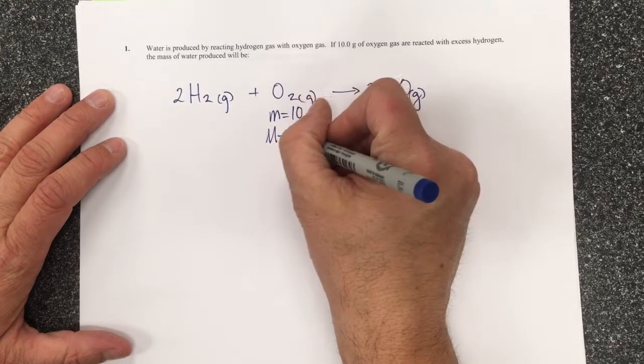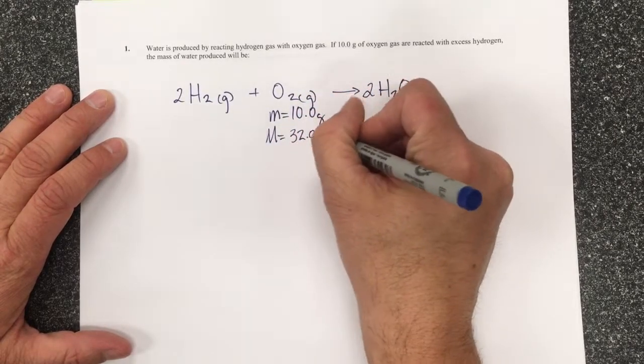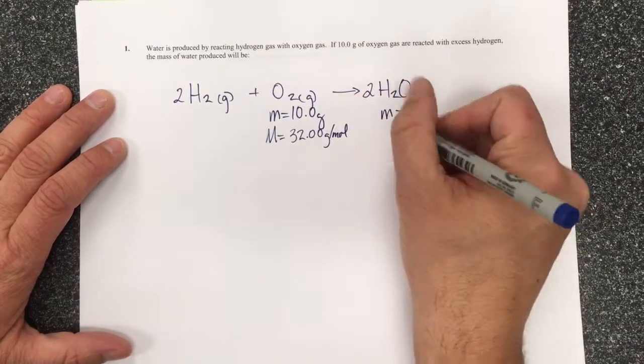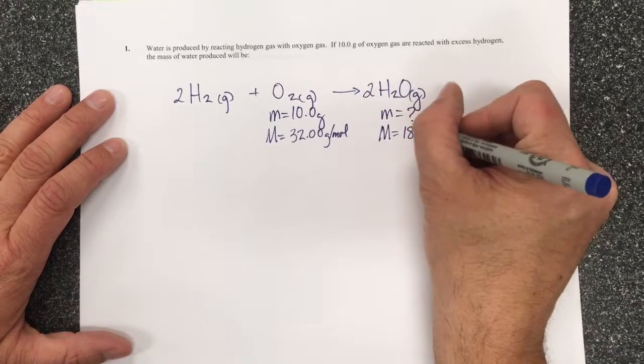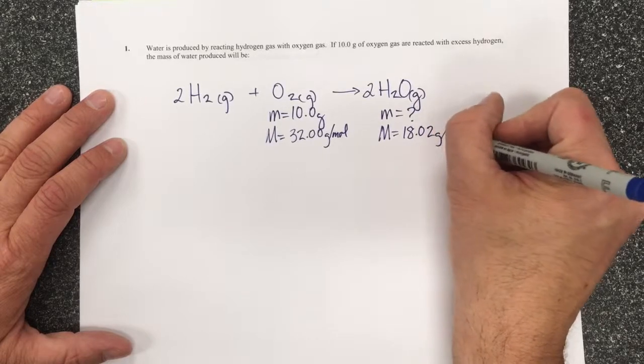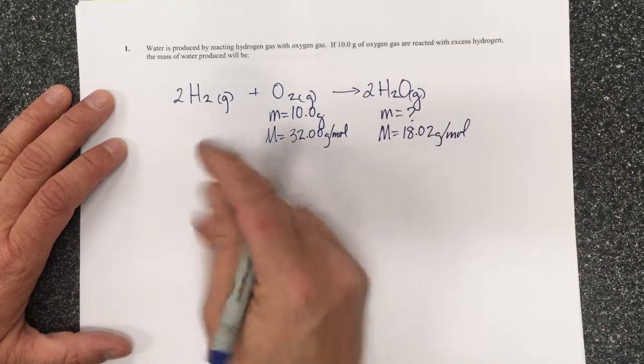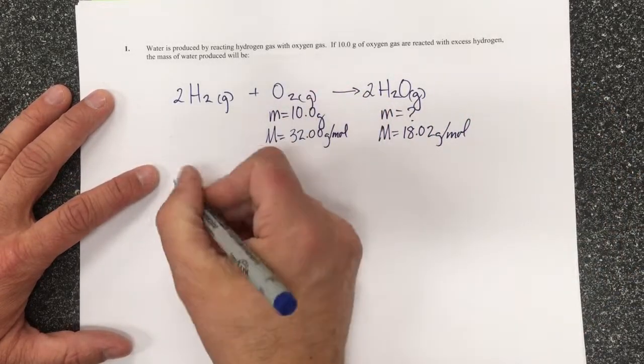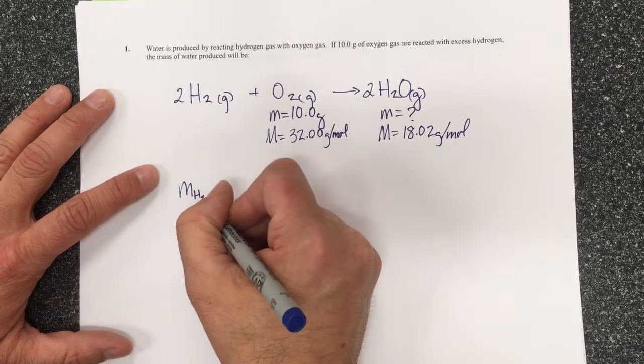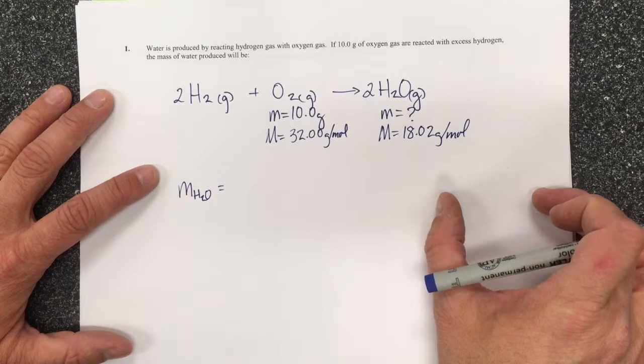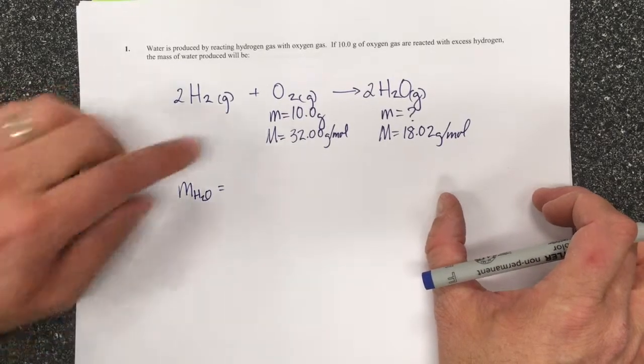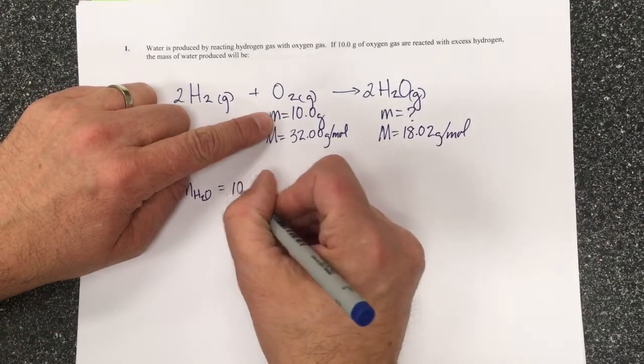The molar mass of water is 18.02 grams per mole. What I want to calculate is the mass of water, so I write that here because my answer over here is going to give me that answer. But I'm going to start with the mass of oxygen, so I've got 10.0 grams of oxygen.